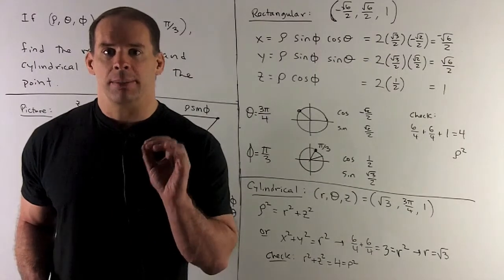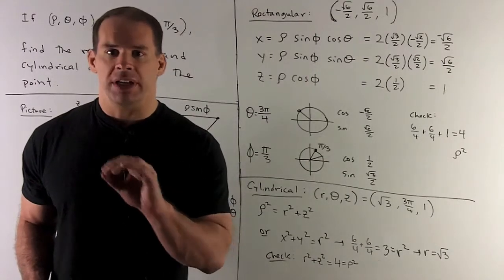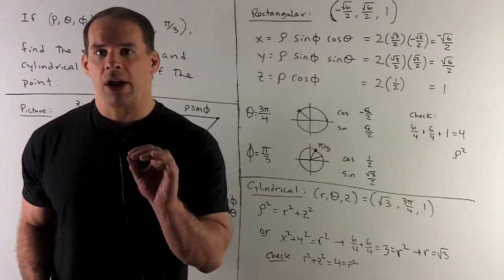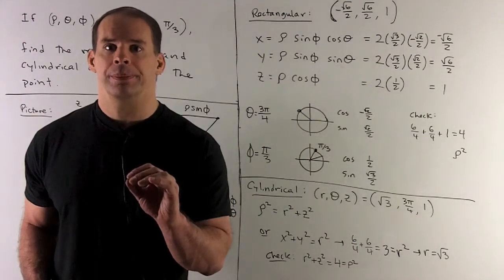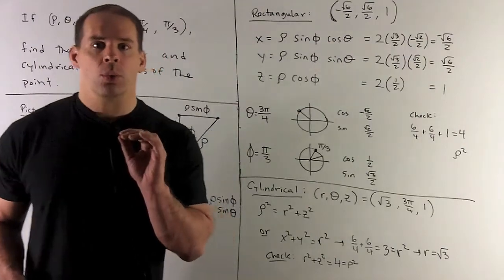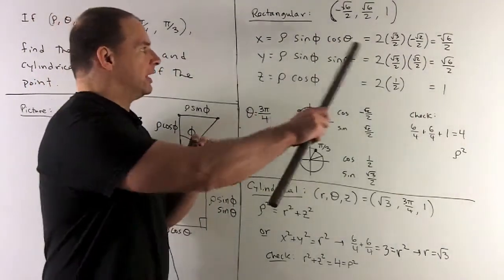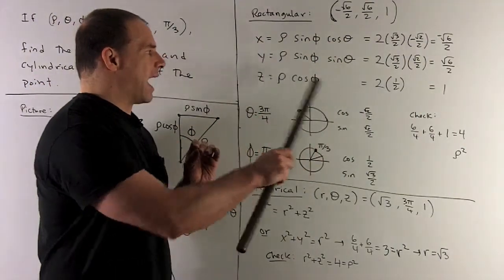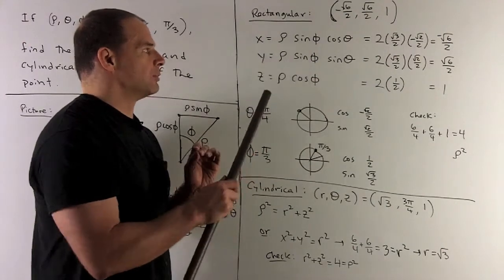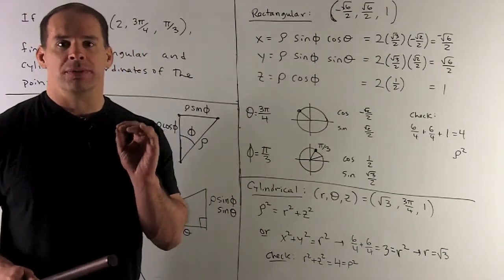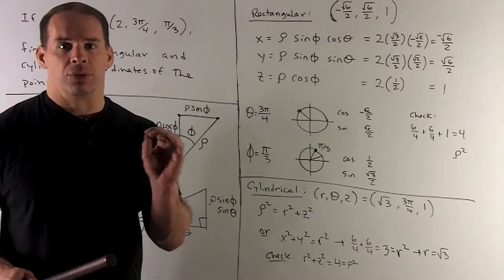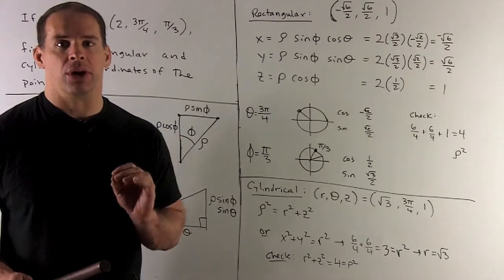Now, probably better to memorize these equations, but if you need to re-derive, those two triangles have everything you need. So our three equations, all we need to do now is put our angles and our rho in and see what comes out. First, we figure out cosine sine for three pi fourths and pi thirds.